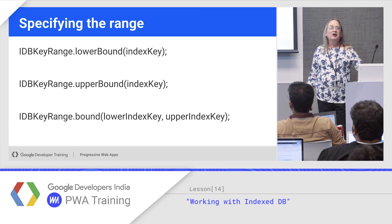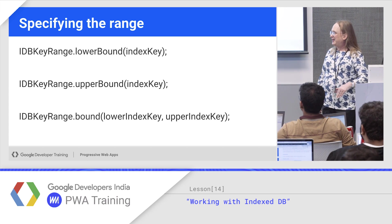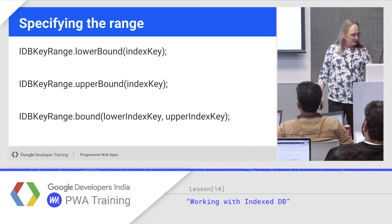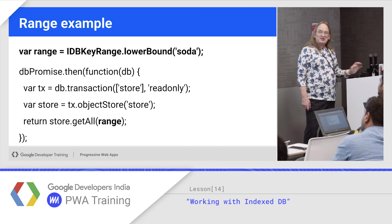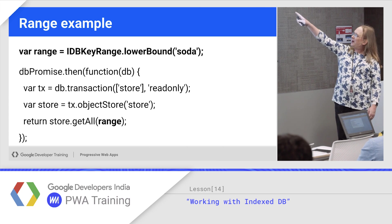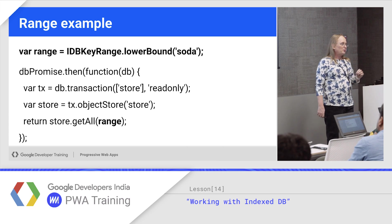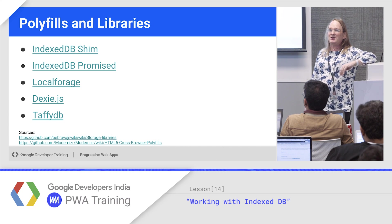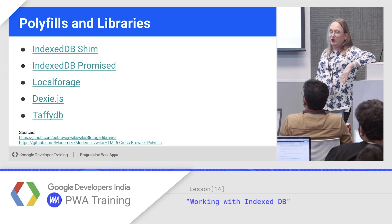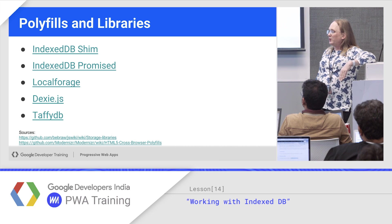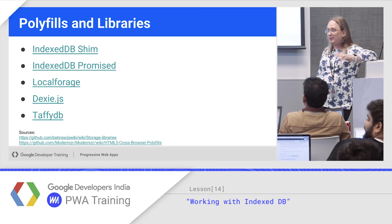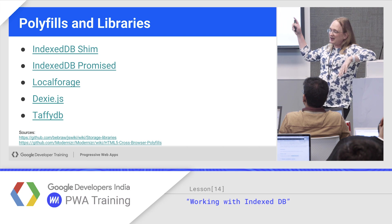For ranges, you can specify a range so you don't have to retrieve the whole database. You can specify a lower bound on an index, an upper bound, or a range in between. Set a range and call store.getAll from that range — for example, everything from 'soda' on up. There are polyfills and libraries available: we really like IndexedDB Promised, IndexedDB Shim is interesting, and LocalForage is popular — it lets you work with IndexedDB if it's there, and falls back to local storage if it's not. For this lab and this class, we're using IndexedDB with IndexedDB Promised.